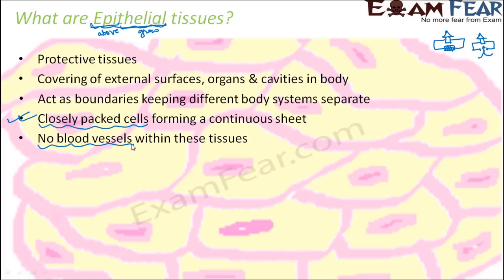How do we know that epithelial tissues do not have blood vessels? Look at your hand — if you hit the wall or press your hand hard, does it start bleeding? No. Because the uppermost layer of our skin is basically epithelial tissue, and those epithelial tissues do not have blood vessels, so blood does not come out. Bleeding starts only when something pierces deep inside, going well below the epithelial tissue and hurting some other tissue layer where blood vessels are present. That is how we know epithelial tissues do not have blood vessels.